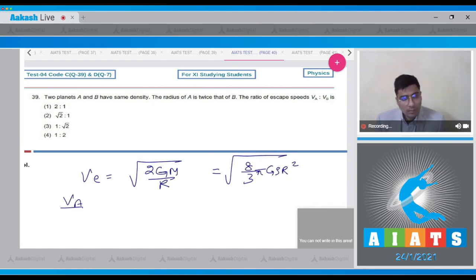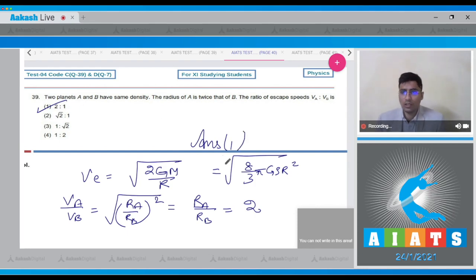Therefore, va by vb will be equal to under root of ra by rb whole square, which will be equal to ra by rb, and this will be equal to 2 as given in the question. Hence for this question, the correct answer is option 1.